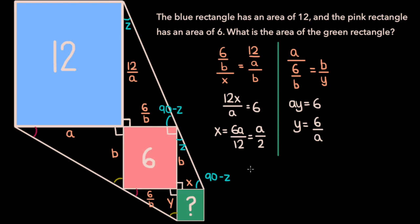Now recall that we're looking for the area of the green rectangle, which is just x times y. x is a over 2, and y is 6 over a, so the area of the green rectangle is a over 2 times 6 over a. We can cancel out the a in the numerator with the a in the denominator, and we're left with the area of the green rectangle as 6 over 2, which is 3.